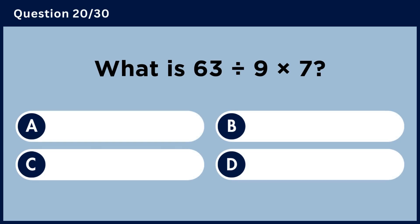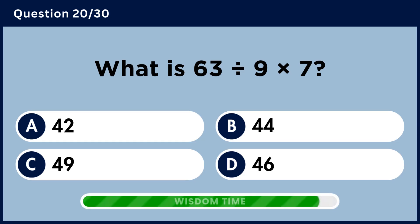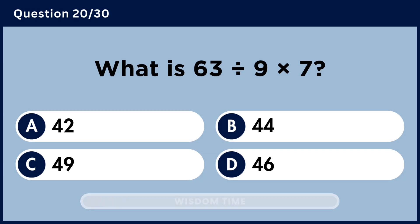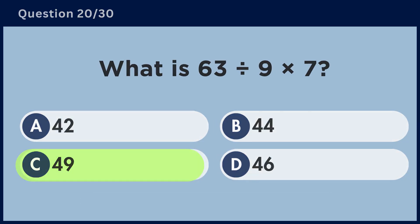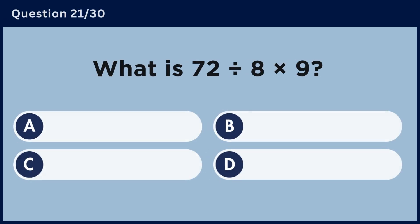What is 63 divided by 9 multiplied by 7? Answer D, 18.